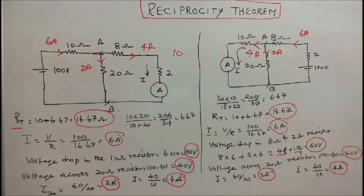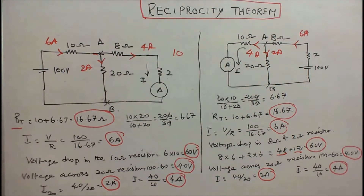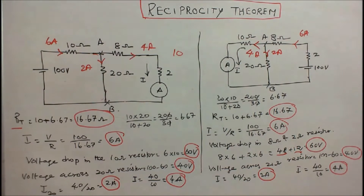Now we will work out one problem on the Reciprocity Theorem. The given circuit consists of four resistors: 10 ohm, 20 ohm, 8 ohm, and 2 ohm. An ammeter is connected in series with the 2 ohm resistor, and the circuit is energized by a 100 volt independent voltage source. The question is: find the ammeter reading.